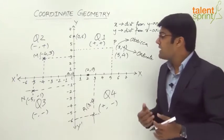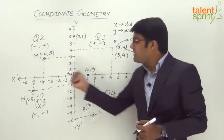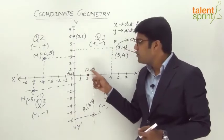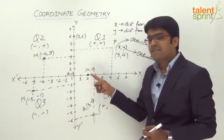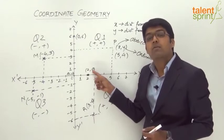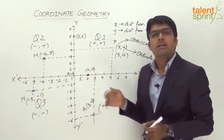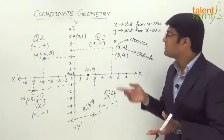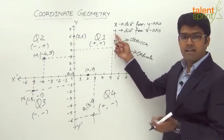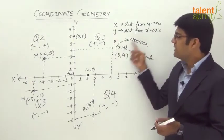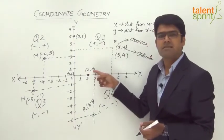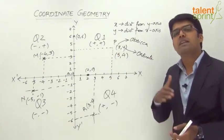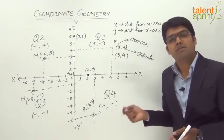We can also observe that any point which is on the x-axis, like the point (2, 0), will always have an ordinate equal to 0. Why? If the point is on the x-axis, its distance from the x-axis will be 0. Since the ordinate y is the distance from the x-axis, and the point is on the x-axis, its ordinate is 0.